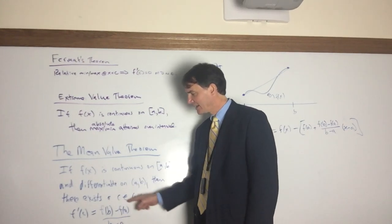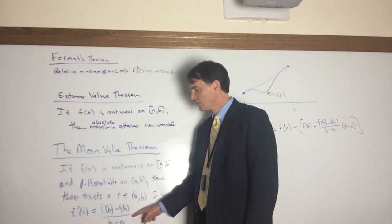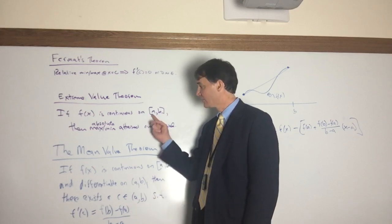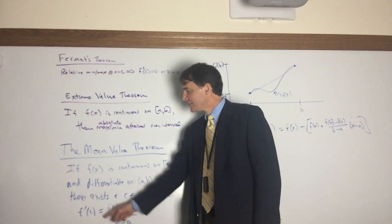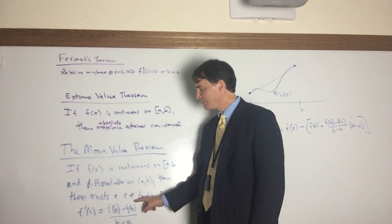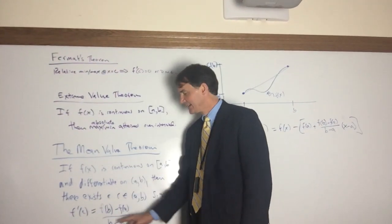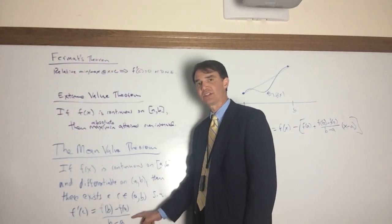Now if you look at this, [f(b) - f(a)]/(b - a), you see the average rate of change of the function over the interval from a to b. So what we are saying is that there's some place in the interval between a and b where the instantaneous rate of change equals the average rate of change over the interval.